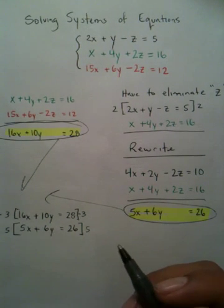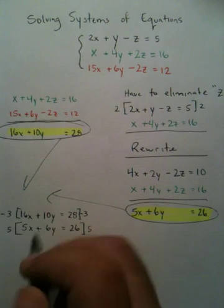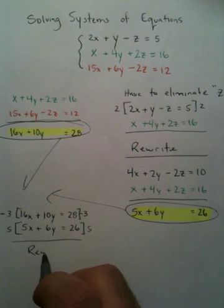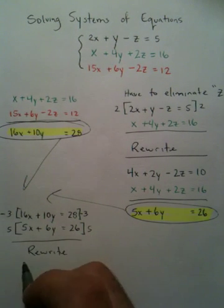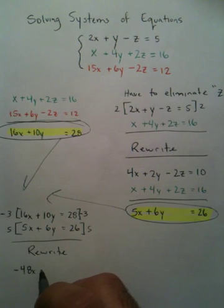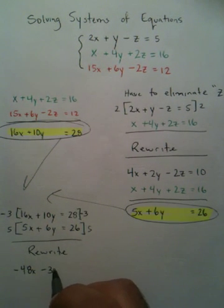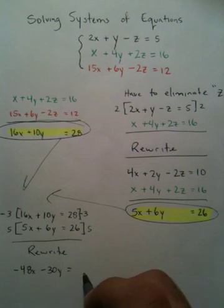And so we multiply all that business out and we rewrite again. So after we rewrite this function, we're going to get negative 48x, that's 3 times 16, minus 30y. 3 times, negative 3 times 28, happens to be negative 84.